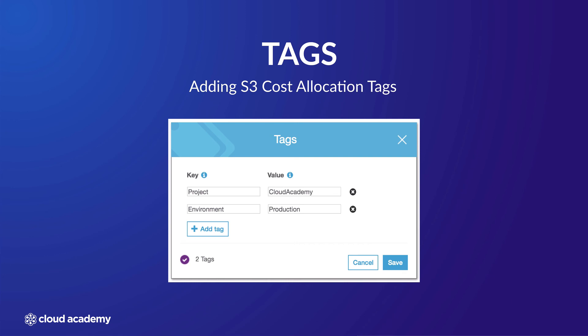One point to note is that you must activate your cost allocation tags from within AWS Billing before they will show up on any reports. To do this, go to your AWS Billing and Cost Management dashboard from within the AWS Management Console, select Cost Allocation Tags, and then activate any user-defined tags that you created.